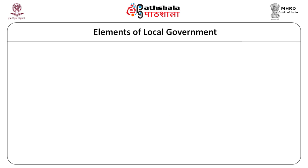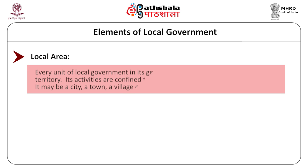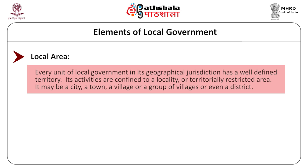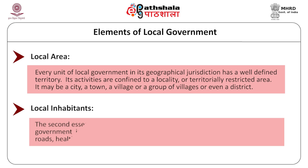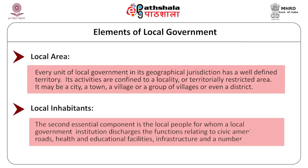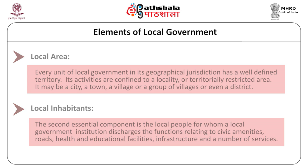Elements of the local government include, first, local area — meaning that government is only for the specific number of people living in a specific area. Second, local inhabitants — only those people who are living within the limits of that local area are able to get the services of the local government.